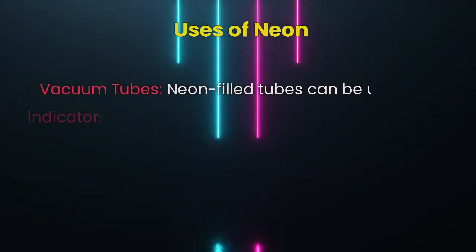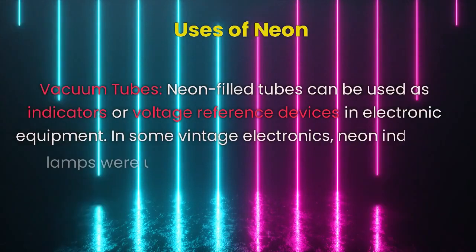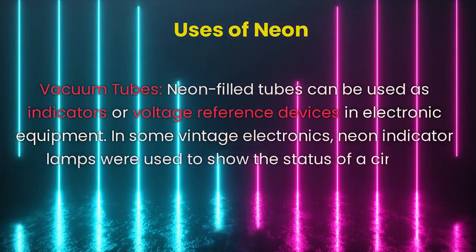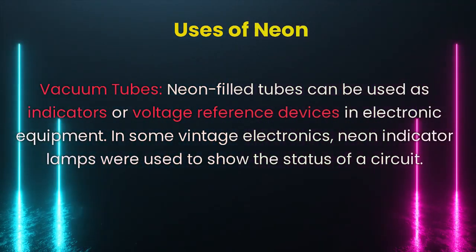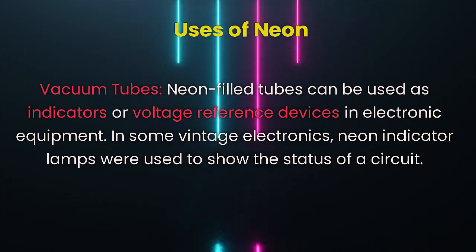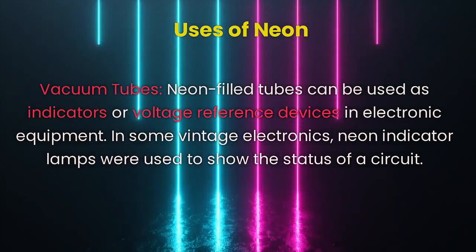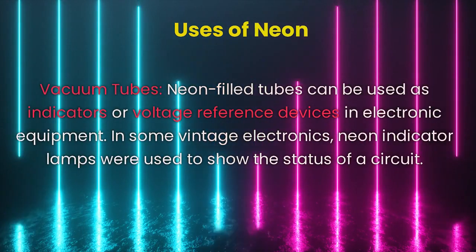Vacuum Tubes: Neon-filled tubes can be used as indicators or voltage reference devices in electronic equipment. In some vintage electronics, neon indicator lamps were used to show the status of a circuit.